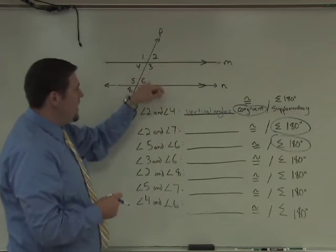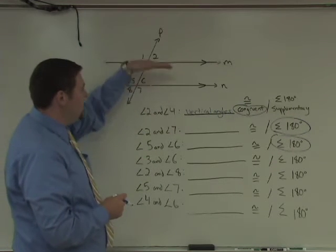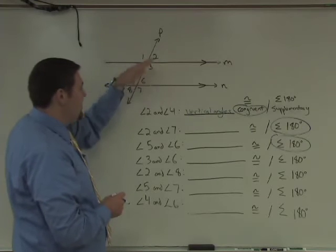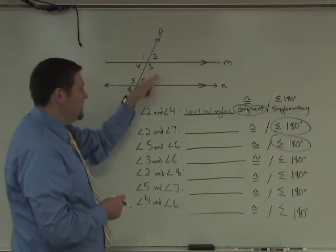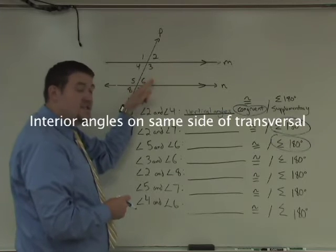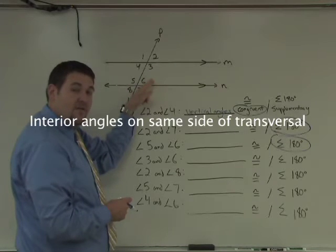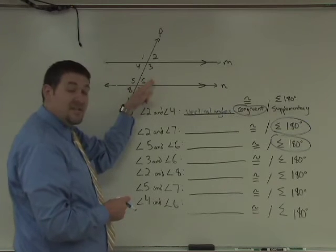Angles 3 and 6. Angles 3 and 6 are on the interior of the parallel lines, and on the same side of the transversal on the right. Angles 3 and 6 are called interior angles on the same side of the transversal, and they too are supplementary.